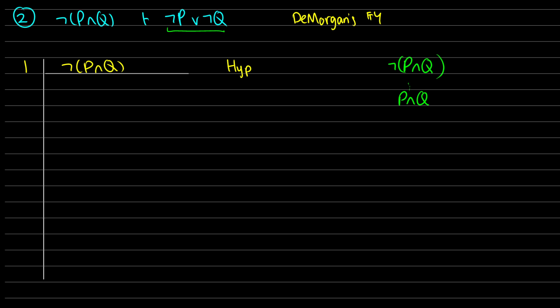So in line 2, I want to assume ¬(¬P∨¬Q) for contradiction. What I'm going to do is use this assumption to find a contradiction, which means we'll get ¬¬(¬P∨¬Q) and then use double negation on that. So maybe not intuitive right away, but based on this reasoning — the fact that I can use our hypothesis for a contradiction — that's what we'll end up doing. This is probably the best way: assume our consequent is false and see what happens.